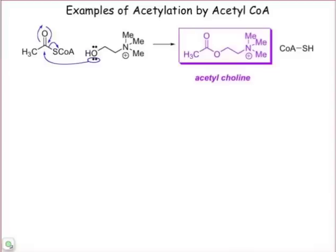For example, in the synthesis of the neurotransmitter acetylcholine, whose structure is shown here, it's the result of a substitution reaction that takes place at the thioester of acetyl-CoA. In fact, this really takes place by a two-step sequence: the addition followed by the beta elimination step.